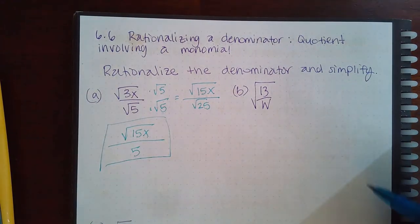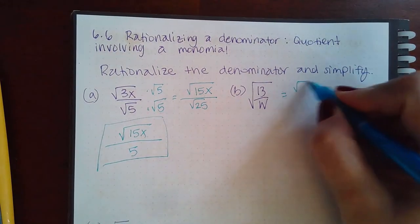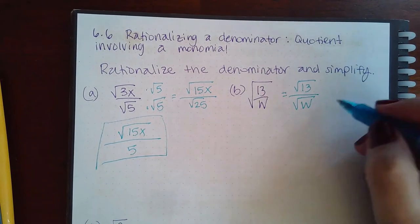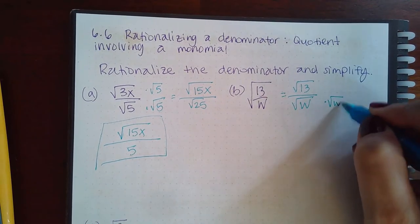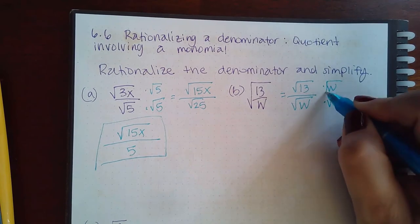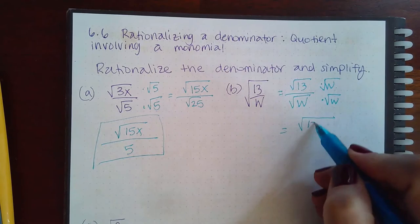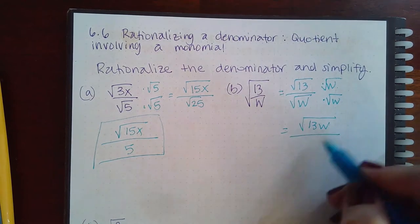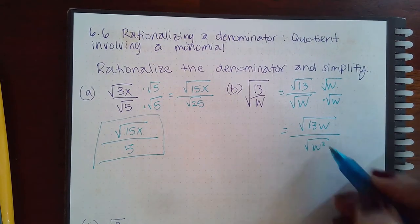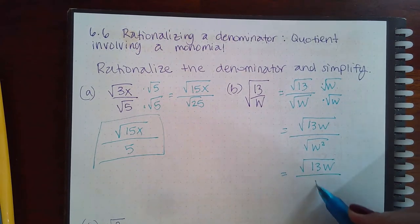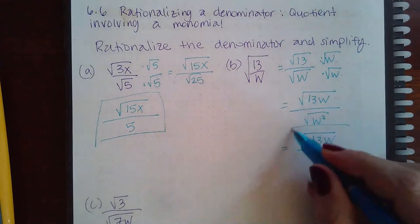Now here I would have to separate the fraction, so square root of top over the square root of the bottom. I would need another w, so then I get the square root of inside times inside, 13w, over the square root of w squared, which does simplify into just w. So this is the final answer.